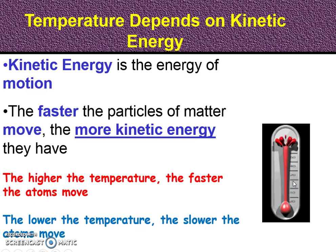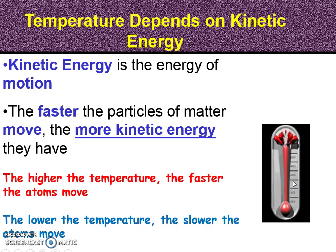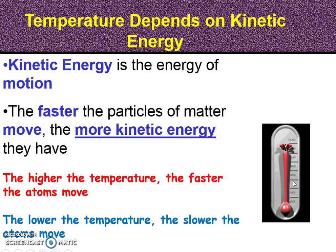Remember when we were talking about gas laws, and we talked about the tire in the summertime on your car — you don't want to over-inflate it, because as the car tires move faster, the friction on the road causes the particles inside to move faster. That's more kinetic energy, so it's going to increase the temperature of the tire. The lower the temperature, the slower the atoms move. That was Charles' law when we talked about our bike tire, our football — it sits out in the garage in the wintertime, and we go to get it and it's soft, kind of deflated, because there's not as much kinetic energy since it's colder outside.